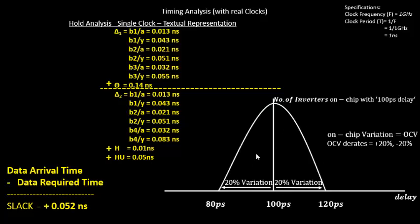Now the next step is to implement the OCV concept. Recall from earlier videos that a cell designed for 100 ps delay can vary between 80 and 120 ps due to fabrication variations. We discussed all of this in the OCV section.